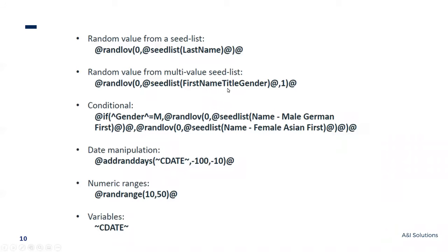So this would give you 'Tim Higgins, Mr., Male.' In one column I want the first name. Here's an if statement — the code part. It says: if gender equals Male, give me a random list of value from the seed list for a male German first name; if not, give me a seed list of a female Asian first name.